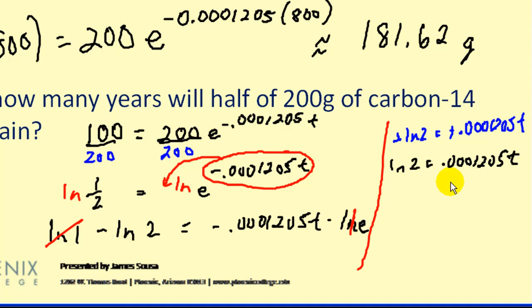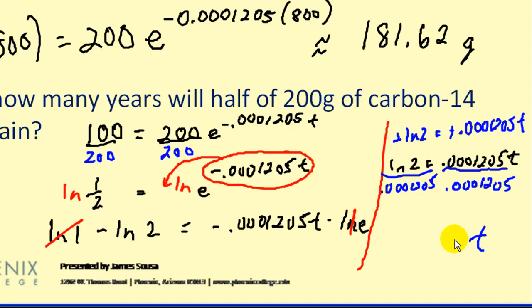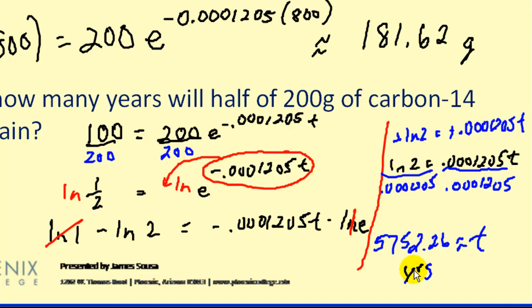Dividing by the coefficient of t, our value of t is approximately 5,752.26 years. As we can see, it takes a considerable amount of time for carbon-14 to decay to half of its starting amount.